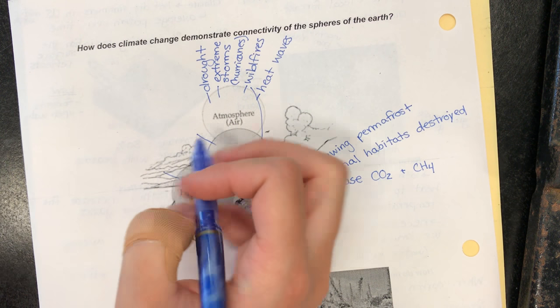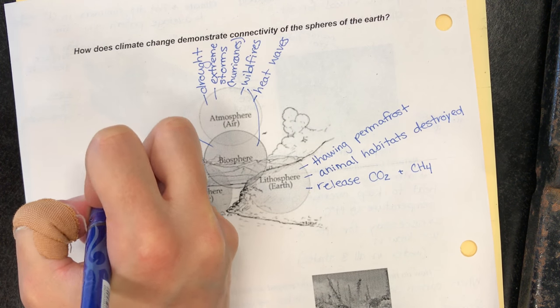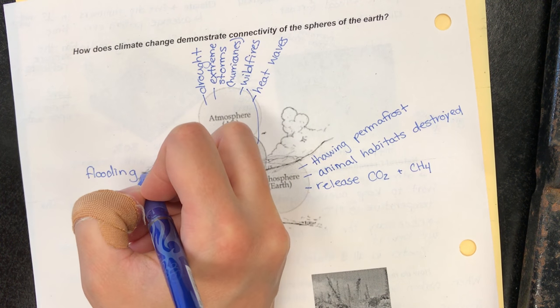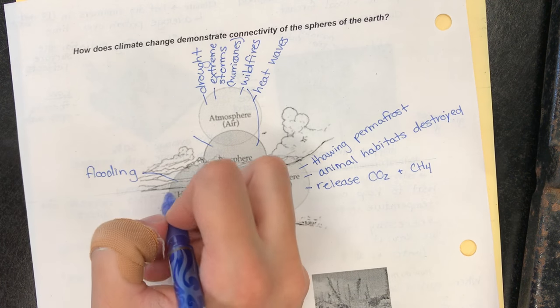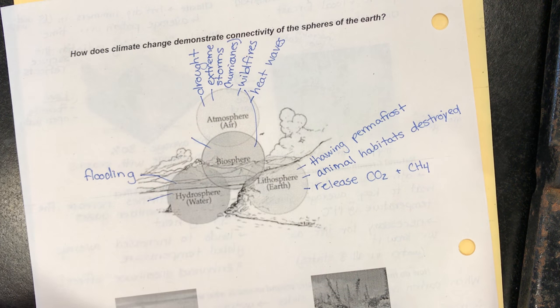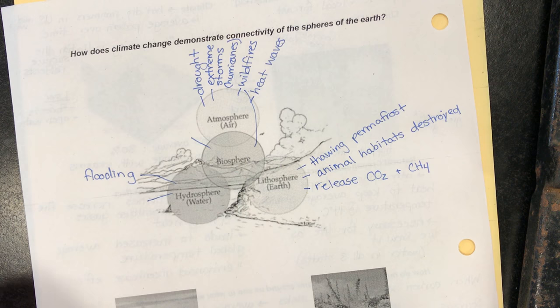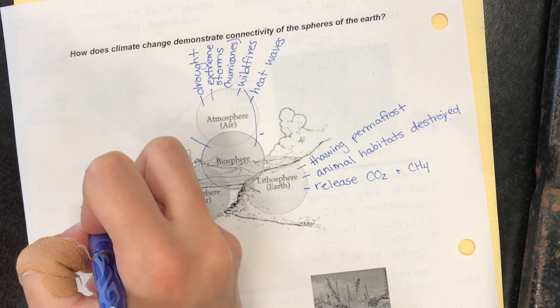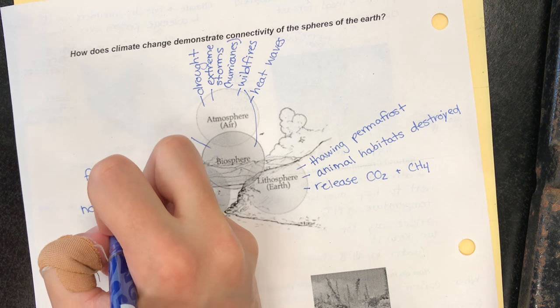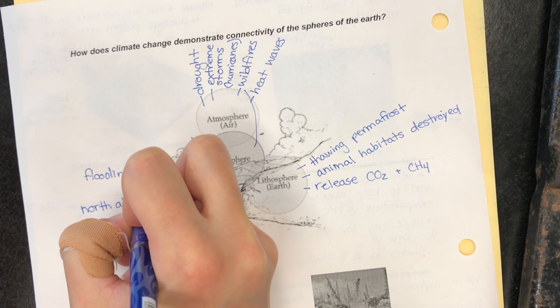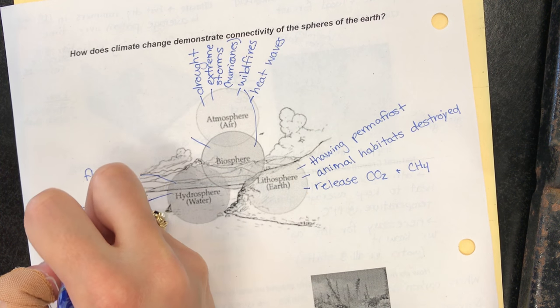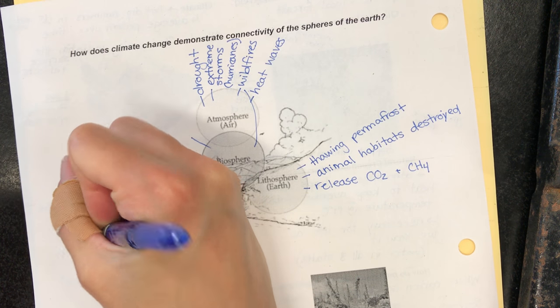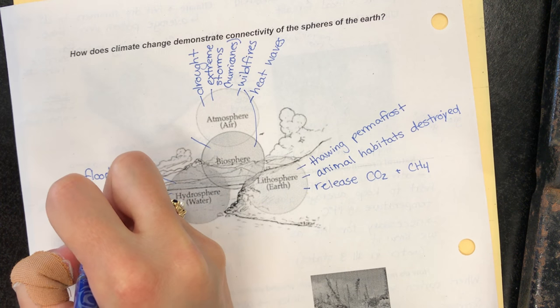At the hydrosphere we get flooding happening because there's more water and less ice. When you have flooding, coastal habitats get destroyed. We talked about the ocean currents and how the North Atlantic pump is slowing down because of the increase in temperature. If that happens it's going to stop the movement of warm air around the world, which is going to make some places really hot and some places really cold.